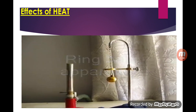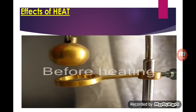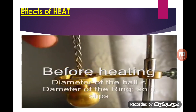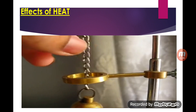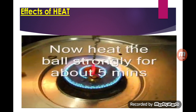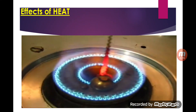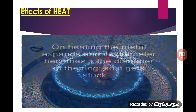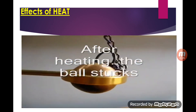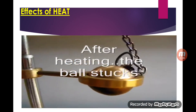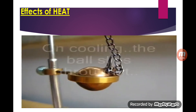Here you can see that a ring is there and one bob is moving through it. But after heating, you will observe that the bob cannot be passed through that ring. It means there is an expansion of that metal — that's why it gets stuck over the ring.